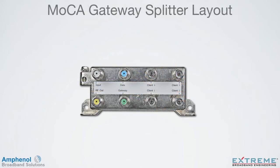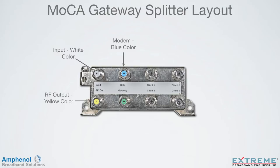Let's take a look at the port layout and their function of the gateway splitter. As with all the Xtreme products in the TruFlex housing, the input port is located in the upper left and is identified with a white port color. To the right of the input is the modem port, identified with a blue port color. A standard modem or MOCA modem could be connected to this port. In the lower left is the RF output port, identified with a yellow port color. Traditional CATV legacy devices such as TVs and set-tops would be connected to this port. To the right is the gateway port, identified with a green port color. The MOCA gateway would be connected to this port.